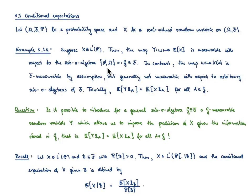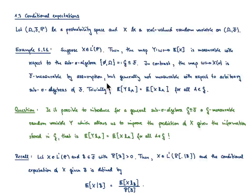A second thing to note: in general, the map ω ↦ X(ω) is F-measurable by assumption, but in general it is not measurable with respect to any arbitrary sub-sigma-algebra. The one exception is the natural filtration generated by X, which is contained in F — with respect to that one, X is measurable. That is the smallest sigma-algebra. If you take any other sub-sigma-algebra, X may lose its measurability property.